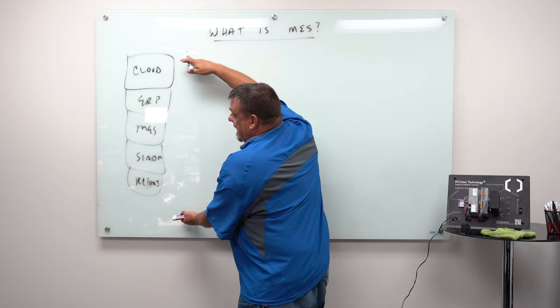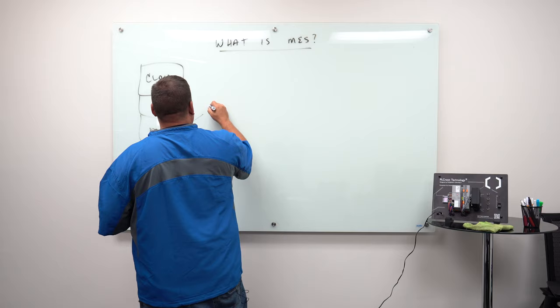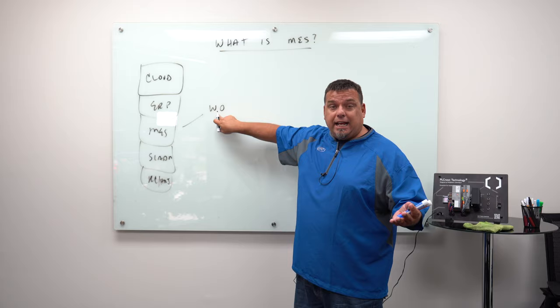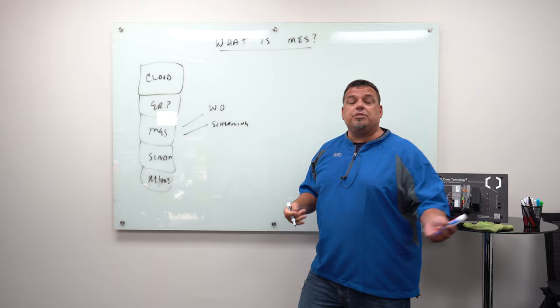In MES, there's basically four core capabilities in pretty much every MES system. We call this the core four. So number one, you have work orders. I take something that I plan to manufacture, and I turn it into a work order. That work order translates into a production run out of an asset. Second thing is scheduling. I schedule work orders to be run.